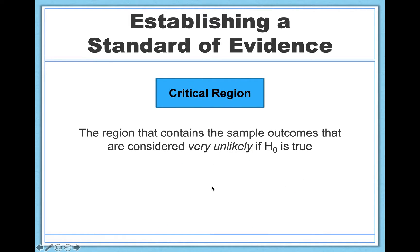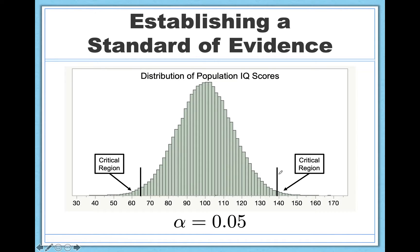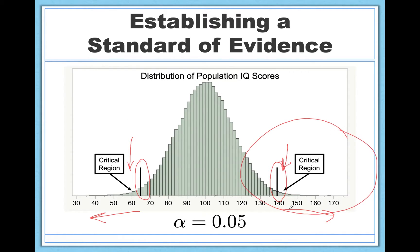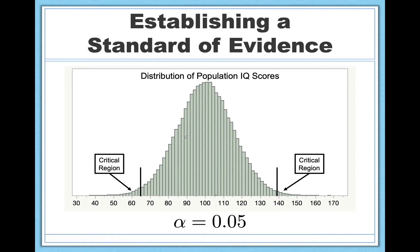The critical region is the last definition I'm going to give you today. The critical region is the region that contains the sample outcomes considered very unlikely if there's actually no effect — if the null hypothesis is true. Notice the similarity to the definition of your alpha level, because the critical region is determined by your alpha level. Anything beyond those boundaries determined by alpha are considered your critical regions. In this case we have two critical regions because we're looking at both increases and decreases. This is beyond scope here, but you could also have a one-tailed test where you're just focusing on one side of the equation.